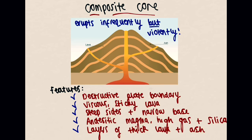The magma type this time is andesitic magma, and this has a high gas content. Because it's got a high gas content, we're going to get quite explosive eruptions occurring. It also has a high silica content, which means it's very viscous — a high viscosity — and very sticky. As a result of all this combined, we get eruptions that are very violent. But the eruptions are infrequent, because of the high silica content and the highly viscous magma causing blockages quite frequently within the vents.